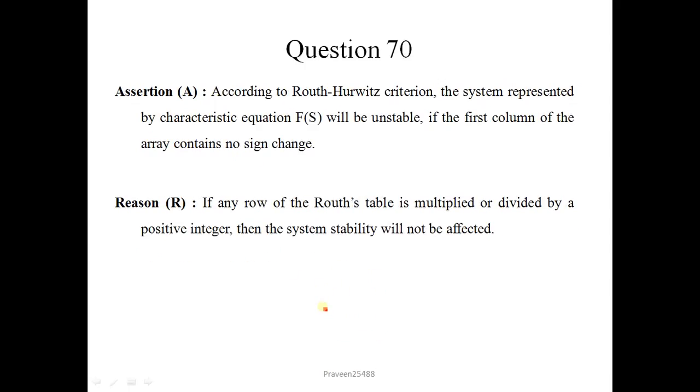Next question is question number 70. According to Routh-Hurwitz criteria, the system represented by characteristic equation will be unstable if the first column of the array contains no sign change. If first column of the array contains no sign change, then system would be stable not unstable. So assertion given in option is incorrect. If any row of the Routh table is multiplied or divided by a positive integer, then the system stability will not be affected. This is correct. If there is no sign change, system will be stable. If there is a sign change, then system will be unstable. If there is a row in which all elements are 0, then system will be marginally stable. Correct option is 4.